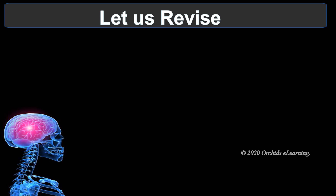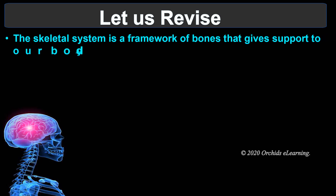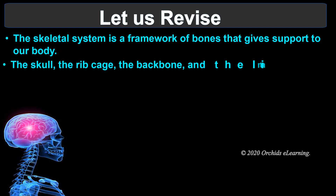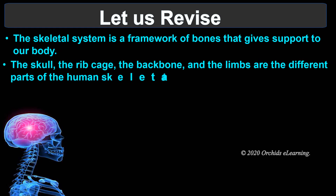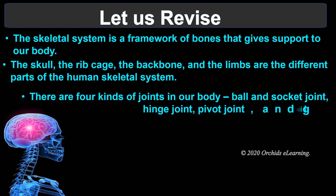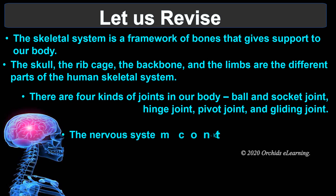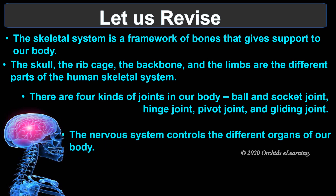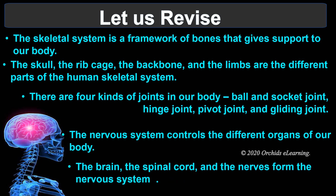Let us revise. The skeletal system is a framework of bones that gives support to our body. The skull, ribcage, backbone, and limbs are the different parts of the human skeletal system. There are four kinds of joints: ball and socket joint, hinge joint, pivot joint, and gliding joint. The nervous system controls the different organs of our body. The brain, spinal cord, and nerves form the nervous system.